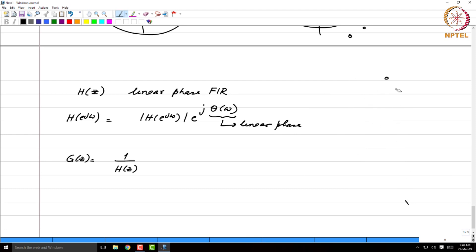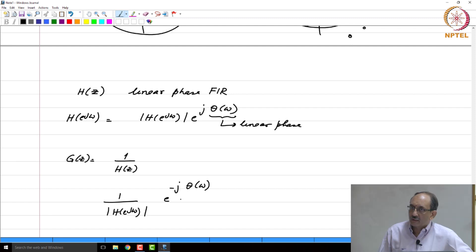Is this linear phase or non-linear phase? Because this will be 1 over this times e^(-jθ(ω)). If θ(ω) were linear phase, this also has to be linear phase. So this is indeed exactly linear phase.